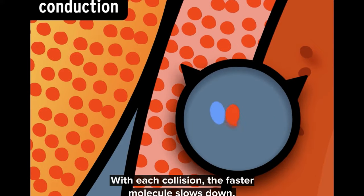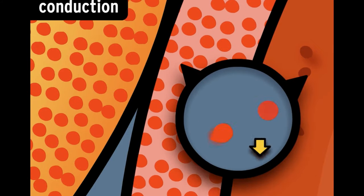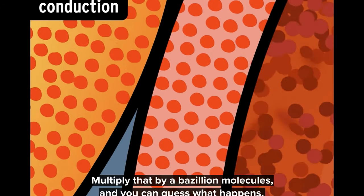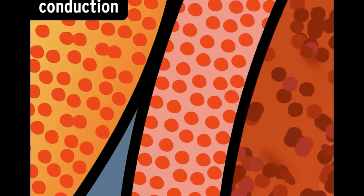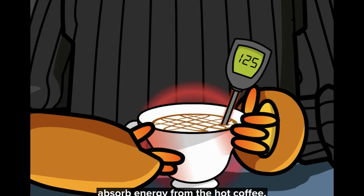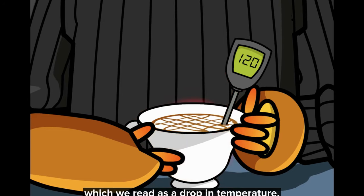With each collision, the faster molecule slows down, and the slower one speeds up. Multiply that by a bazillion molecules, and you can guess what happens. Your hands, and the air all around the cup, absorb energy from the hot coffee, sucking away its molecular speed, which we read as a drop in temperature.